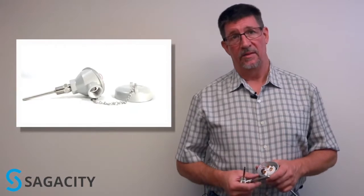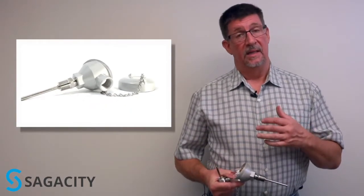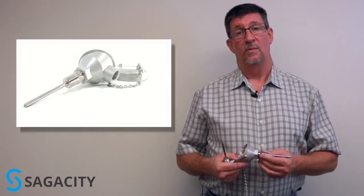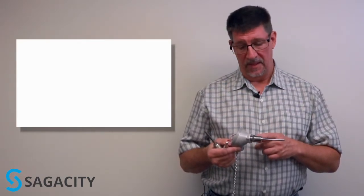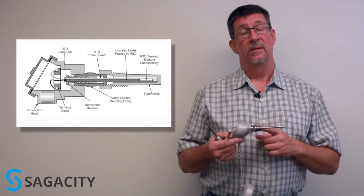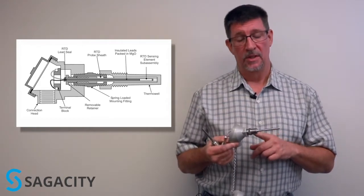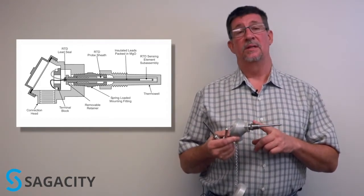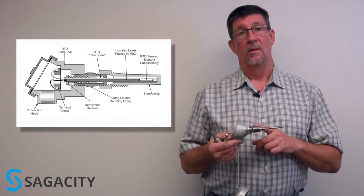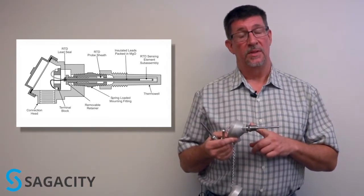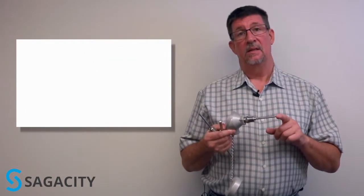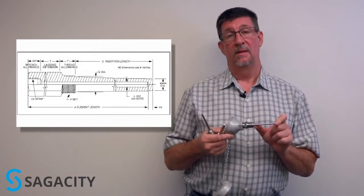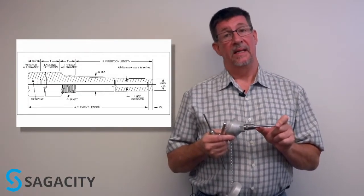When you're specifying an RTD or thermocouple, again keeping in mind that you'll probably interface that device with a thermal well which we're going to cover in another video, but you will want to know how you're going to connect to that thermal well. The most common is a threaded connection. This particular one is a half inch. You may have three quarter inch but typically you're going to thread this into your thermal well. This is your process connection as far as the RTD or thermocouple is concerned. The distance between the bottom of that and the end is your stem length or u-length and that's typically determined by the length of your thermal well.